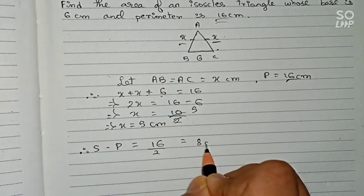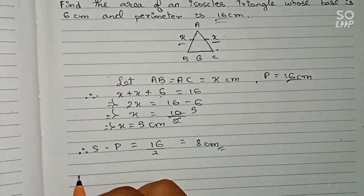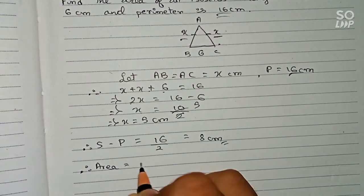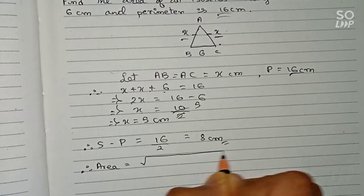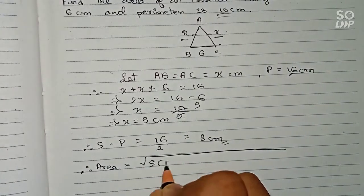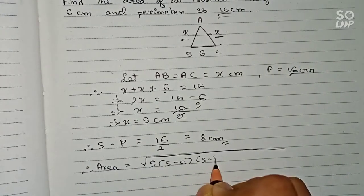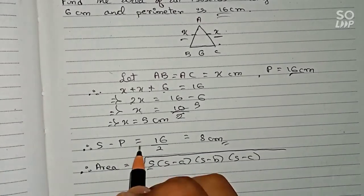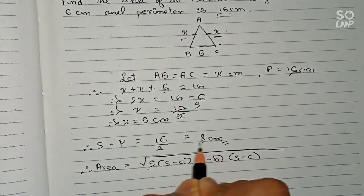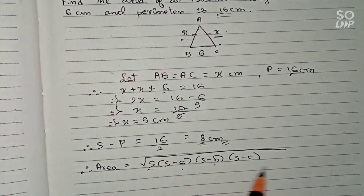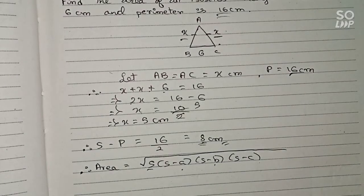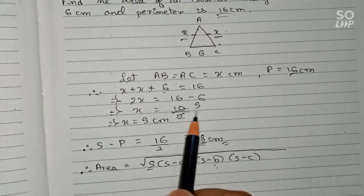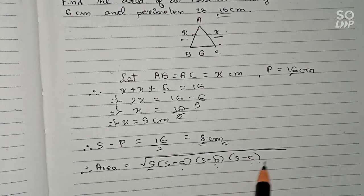Now we can find the area using Heron's formula: Area equals the square root of s times (s minus a) times (s minus b) times (s minus c), where s is the semi-perimeter equal to 8 centimeters, and a, b, c are the three sides of the triangle. Here a is 6, b is 5, and c is also 5.